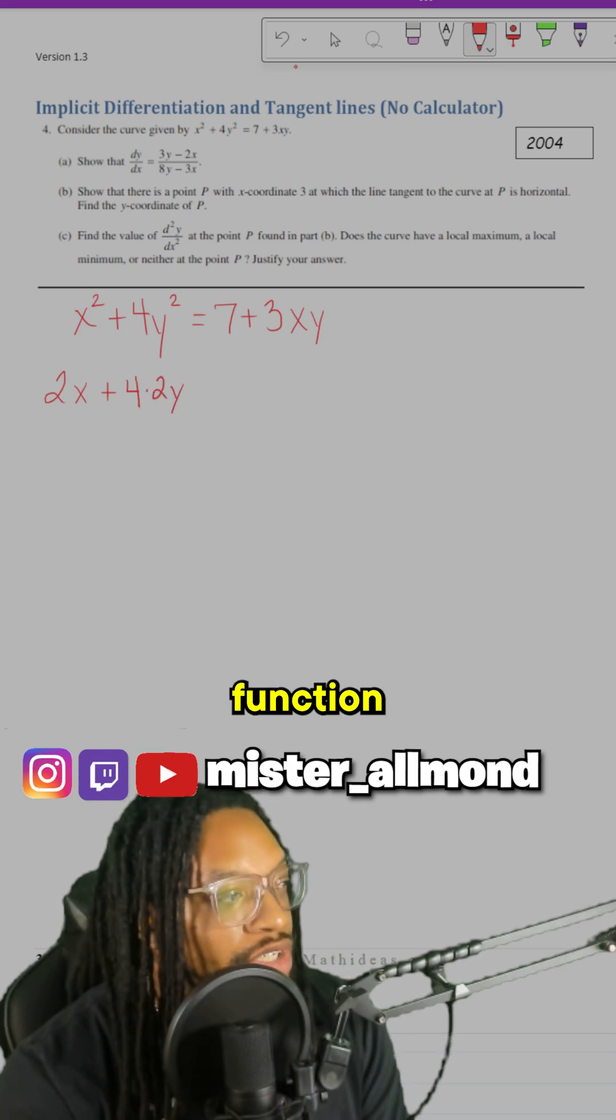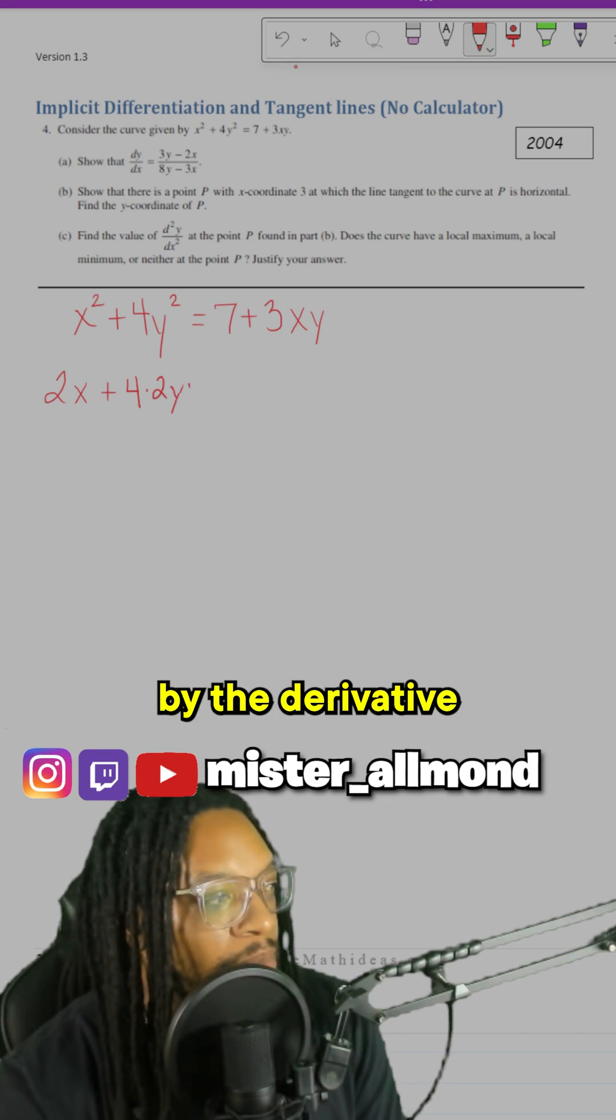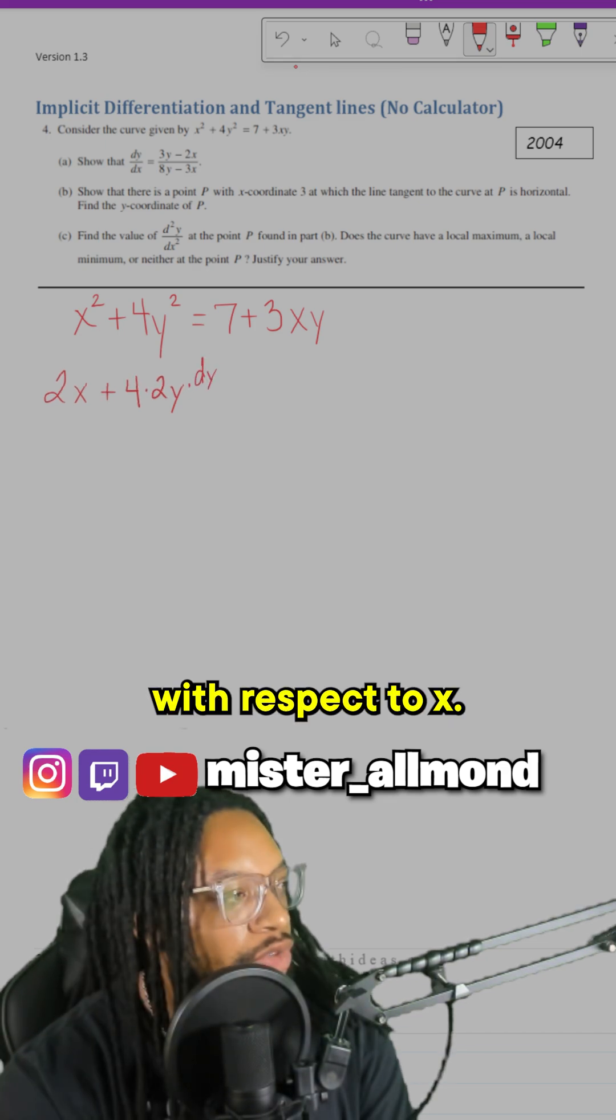Keep the inner function the same, decrease the exponent by 1, and then use the chain rule and multiply by the derivative of y with respect to x.